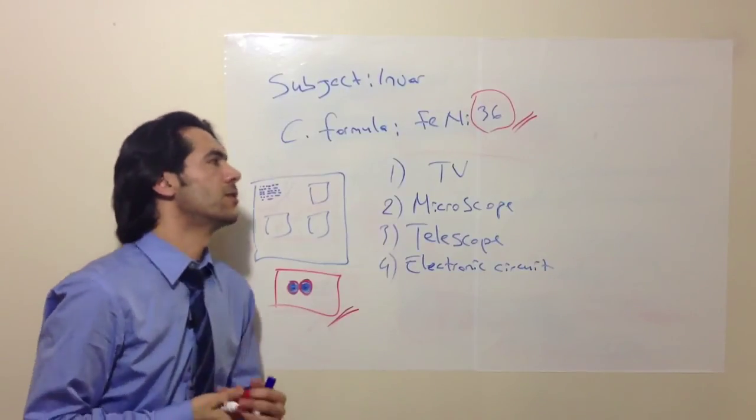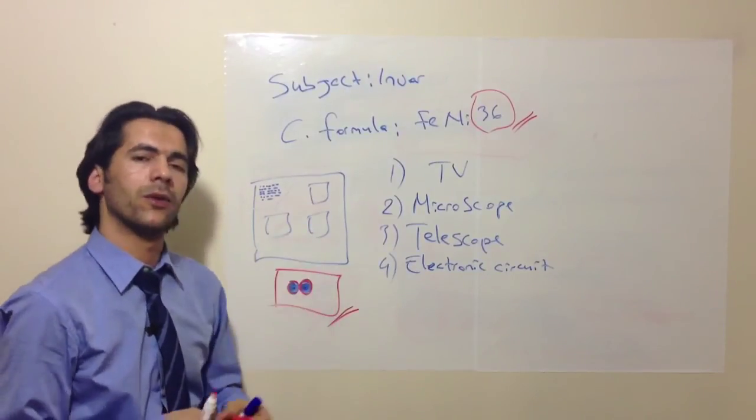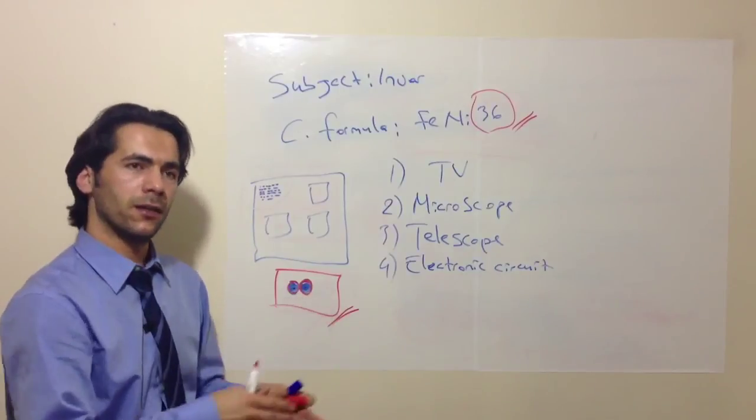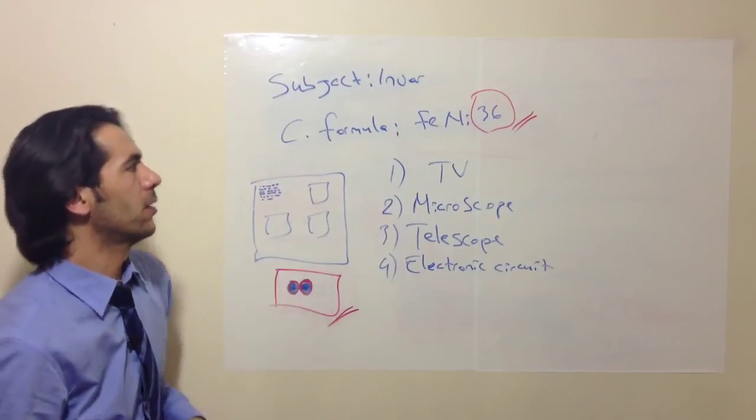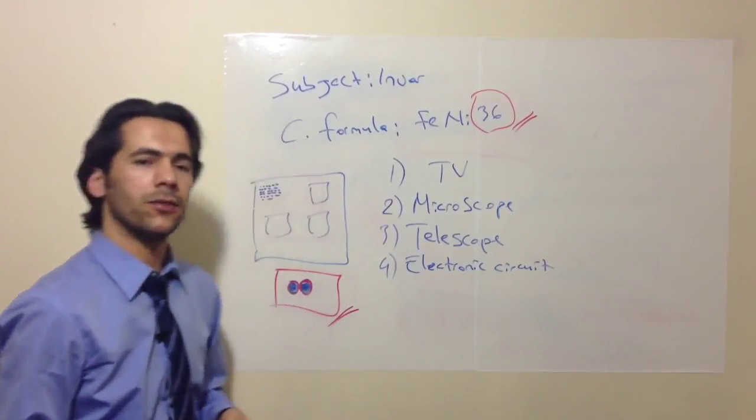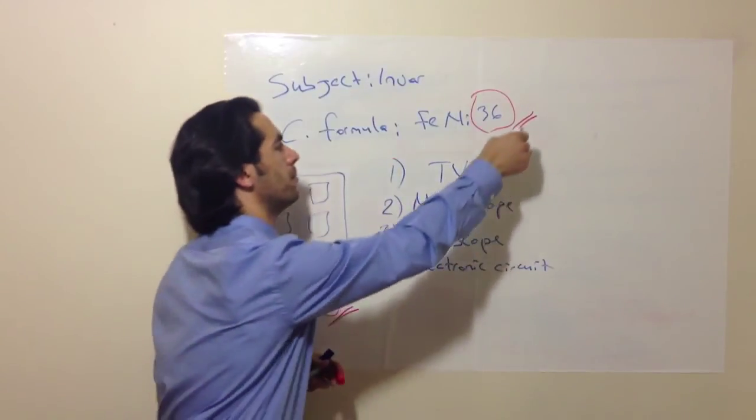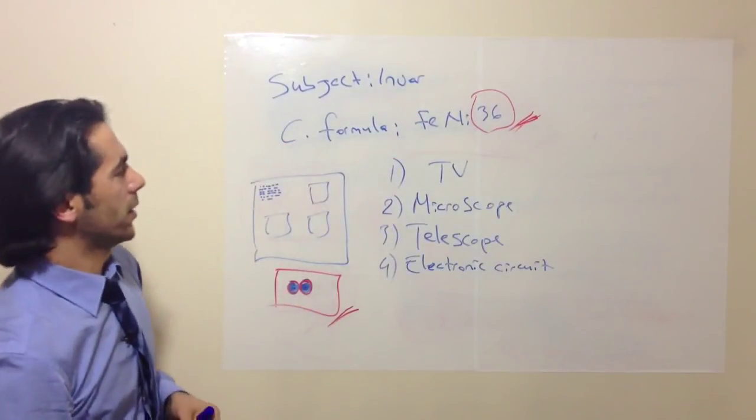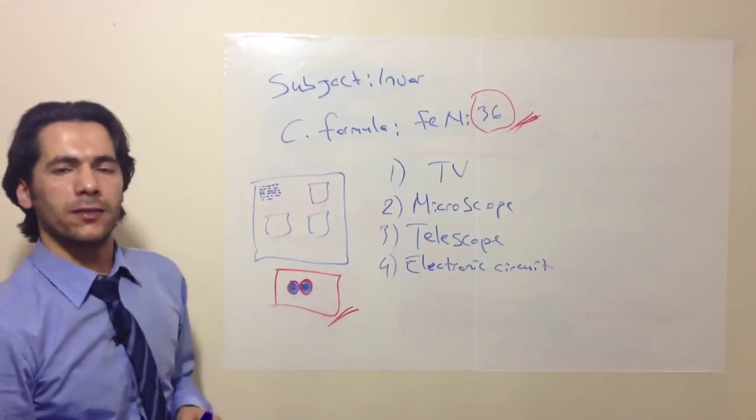So today we studied Invar which contains iron and nickel but high amount of nickel. Because if you know the stainless steels, even they don't have such high amount. 36. I hope you enjoyed my lesson.